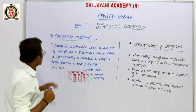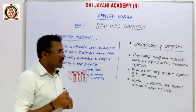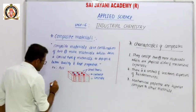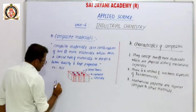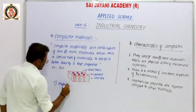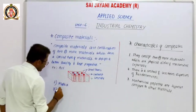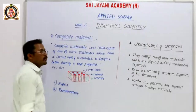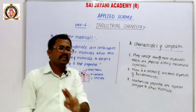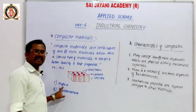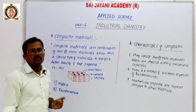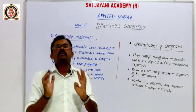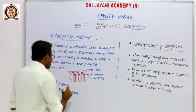A composite material consists of two main types of materials: matrix and reinforcement. The matrix is the base material and forms the maximum portion of the composite material.